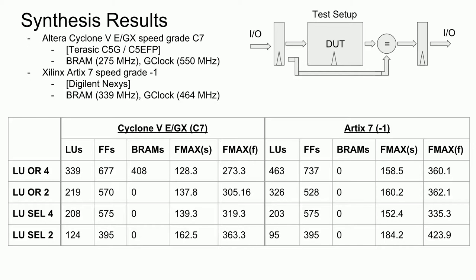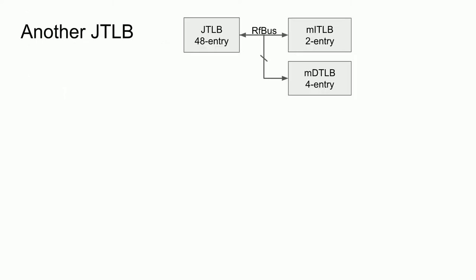That only leaves the large full TLB to implement more carefully. The target structure is a 48-entry JTLB with two micro-TLBs for data and instructions. Recall that the micro-TLBs are 2 and 4 entries in size and are connected to the main joint TLB via a refill bus. Whenever a miss occurs in a micro-TLB, the processor stalls while the JTLB is searched for a matching entry. This allows the JTLB to have only one read port, greatly simplifying the hardware.